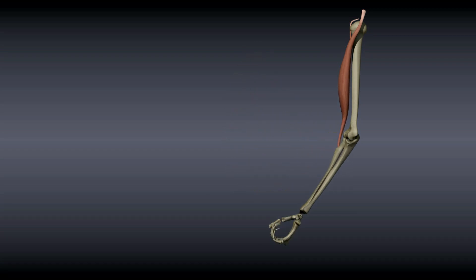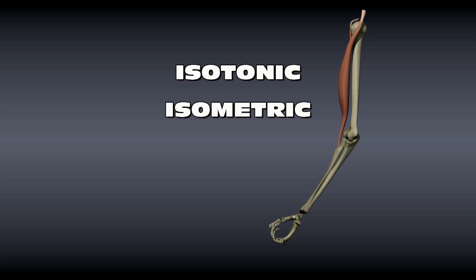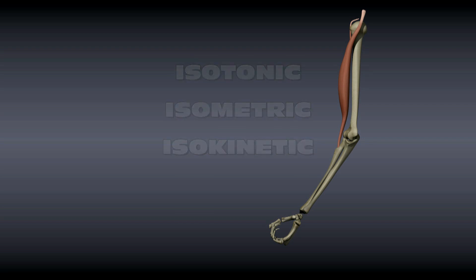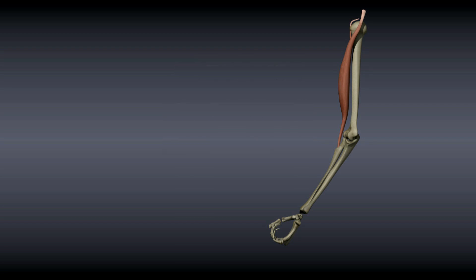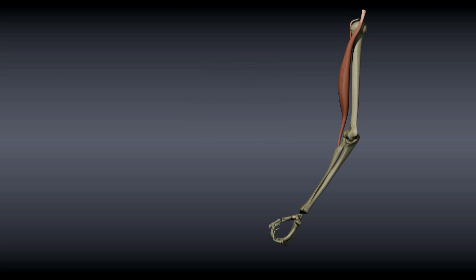There are three types of contractions: isotonic, isometric, and isokinetic. This seems like a pain to memorize until you give some thought to what the words mean. Iso means equal, so when we categorize our muscle contractions, we name them according to what stays the same throughout the contraction.